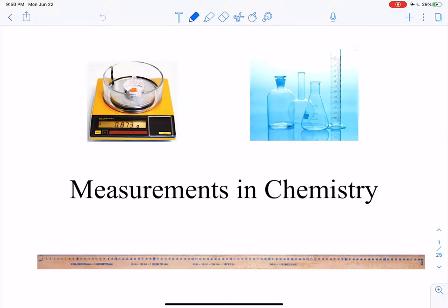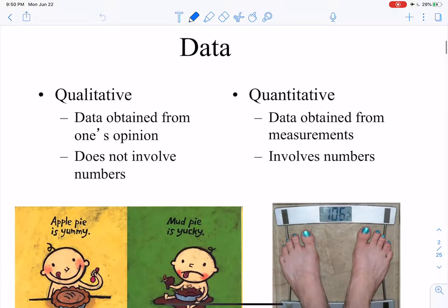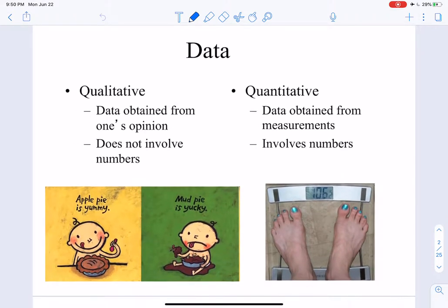Hi students, Professor Gray here. We need to continue on in chapter one and talk about measurements in chemistry. And why do we do measurements? So we can collect data, interpret that data, do some analysis, and come to conclusions. But first, data can come in a couple of different forms. We've got qualitative and quantitative.